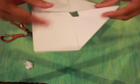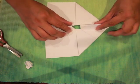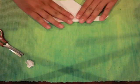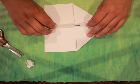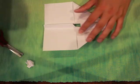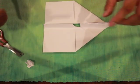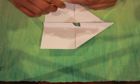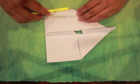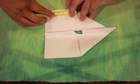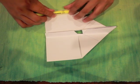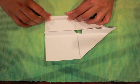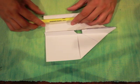Fold this back nicely from the wings. And next you will need a pen or pencil and you need to curl the wings like that.